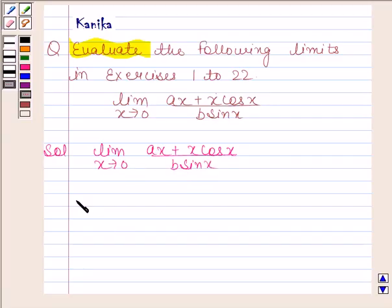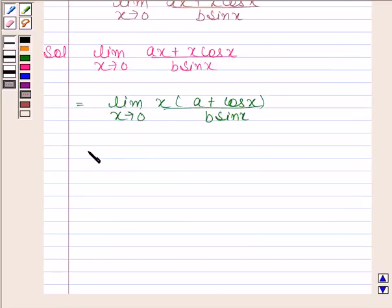Now this is equal to limit x tends to 0. Taking x common from the numerator we get x into a plus cos x by b sin x, and this is equal to limit x tends to 0 a plus cos x by b into x by sin x.